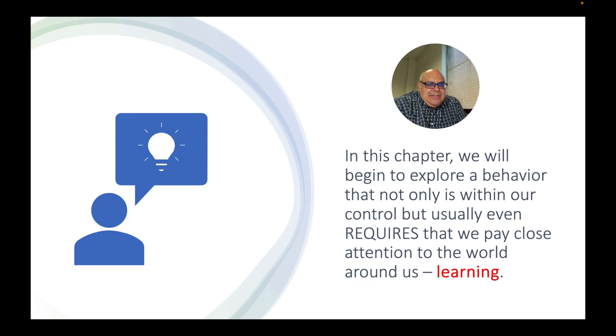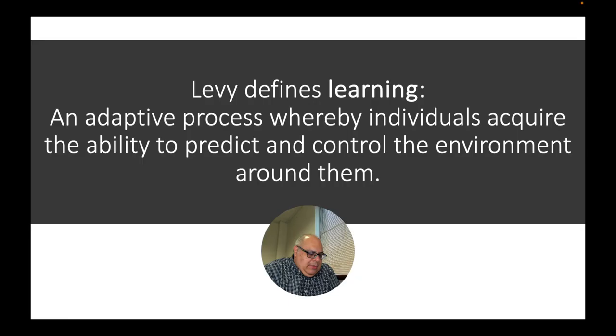Levy defines learning in this chapter as an adaptive process whereby individuals acquire the ability to predict and control the environment around them.